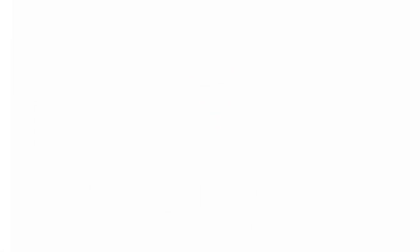How big are the jobs that we run on Magnus? That's an interesting question. Well we're running modern Fortran code using the MPI, the message passing interface. We typically work with somewhere between 16 and 32 nodes. There's 24 cores per node, so we're looking at 384 to 768 cores running in parallel.